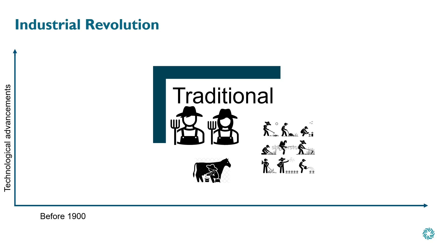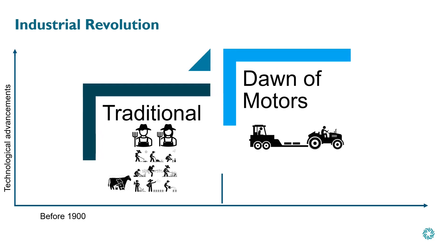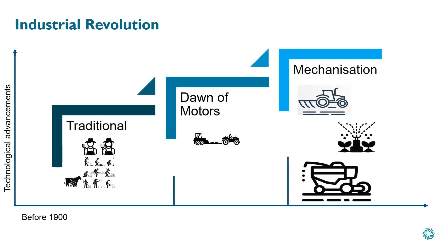With each passing era, we have achieved technological advancement right from inventing the first wheel to the internet. We refer to them as the industrial revolution.